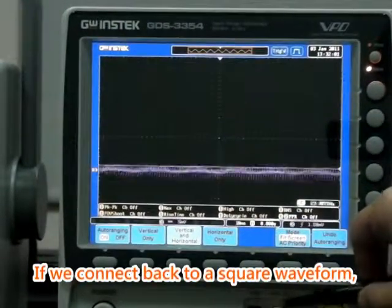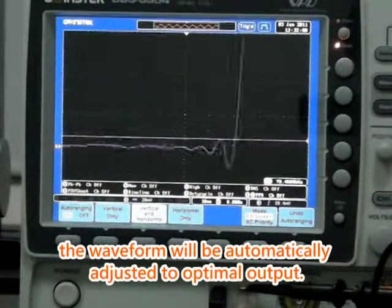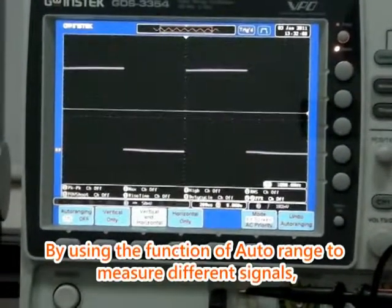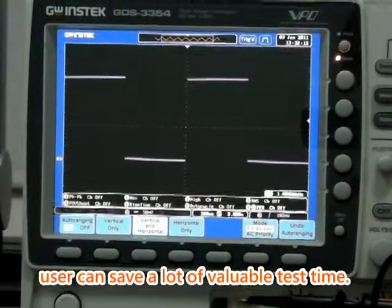If we connect back to a square waveform, the waveform will be automatically adjusted to optimal output. By using the function of auto range to measure different signals, users can save a lot of valuable test time.